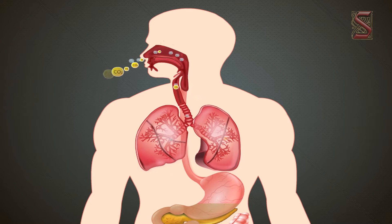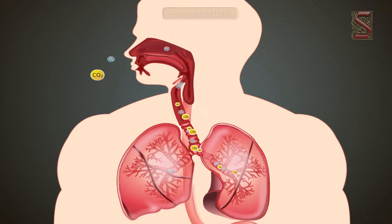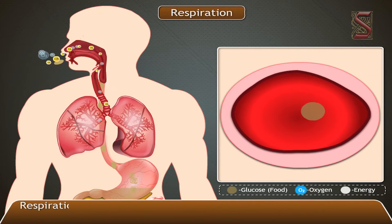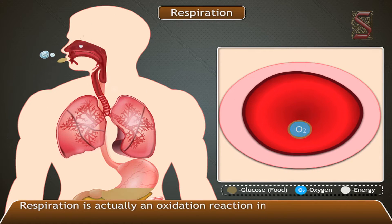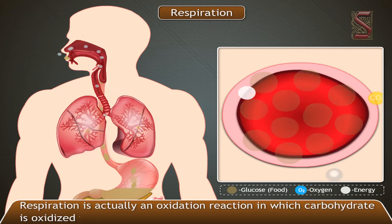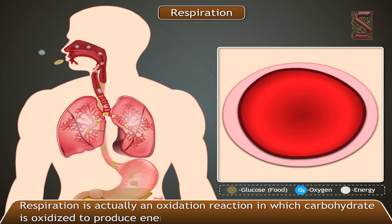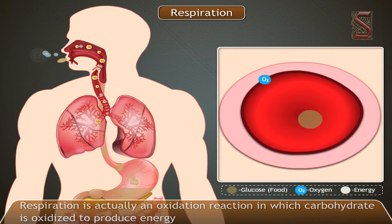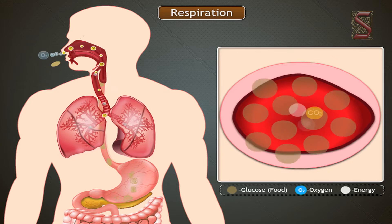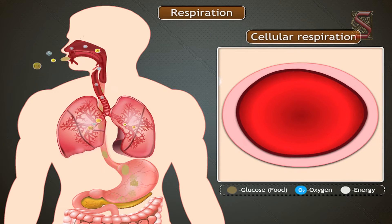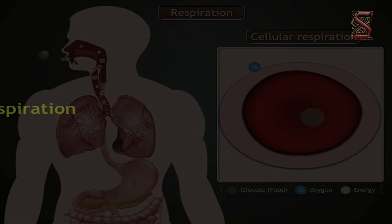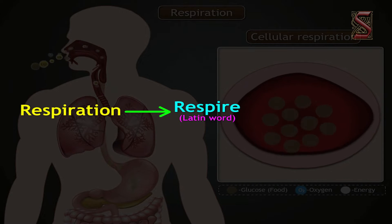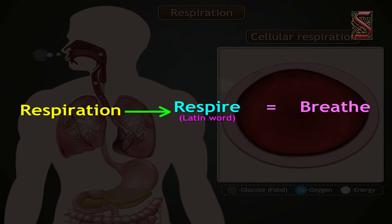The process by which a living being utilizes food to get energy is called respiration. Respiration is actually an oxidation reaction in which carbohydrate is oxidized to produce energy. This happens in the cells, so it is also called cellular respiration. The term respiration is derived from the Latin word 'respire', meaning to breathe. Do you know that respiration and breathing are not the same?